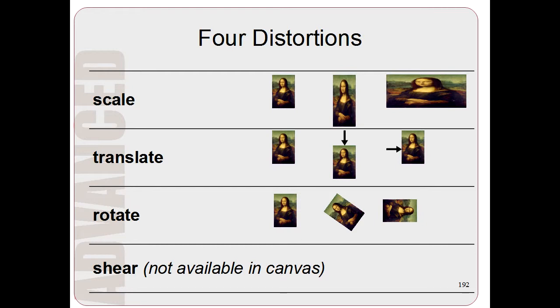The third type of transformation is called Rotate. So basically you can rotate images. And the fourth type is called Shear but this type of transformation isn't available in HTML5 canvas. So let me cover the affine transformations in more detail now.